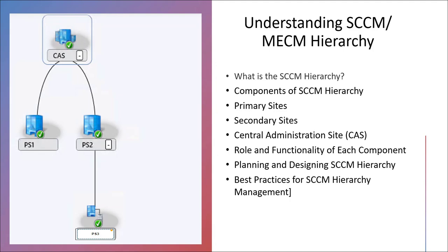If you see on the left-hand side, I have taken this diagram. You will find on the top a CAS (Central Administration Site). From the CAS, you will see two branches coming - PS01 and PS02. From PS02, you will find a sub-branch PS03. These PS01 and PS02 are known as primary sites.